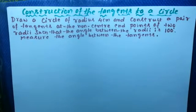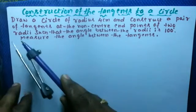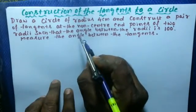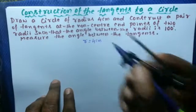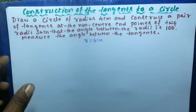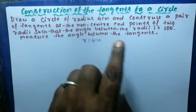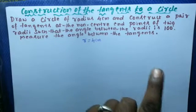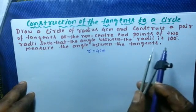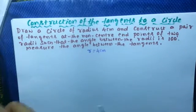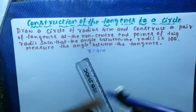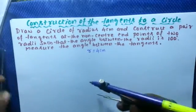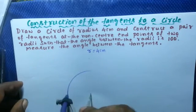The problem is: draw a circle of radius 4 centimeters and construct a pair of tangents at the non-center endpoints of two radii such that the angle between the radii is 100 degrees.